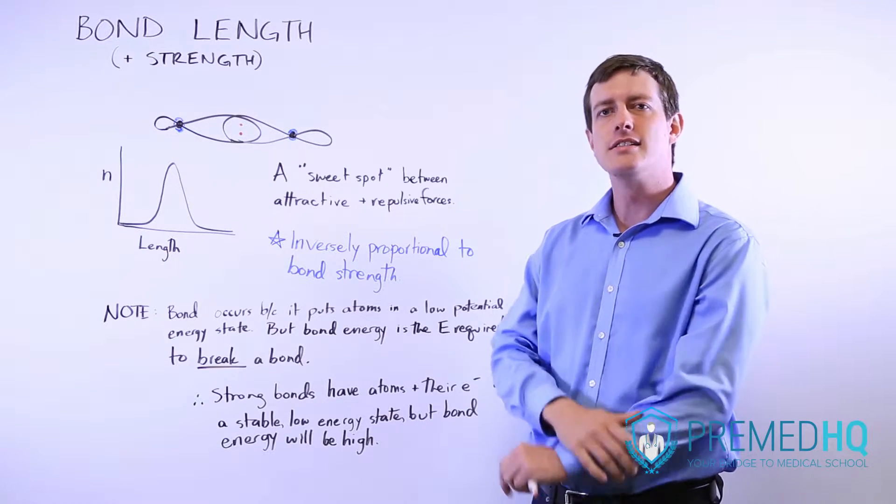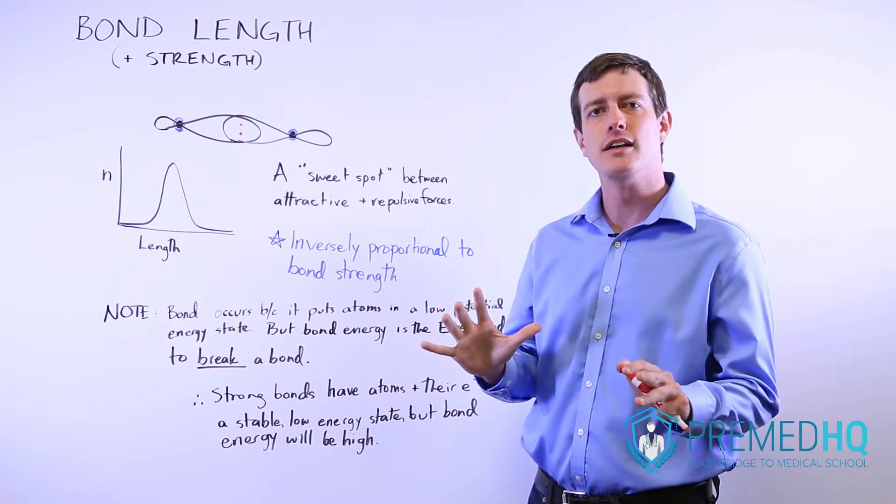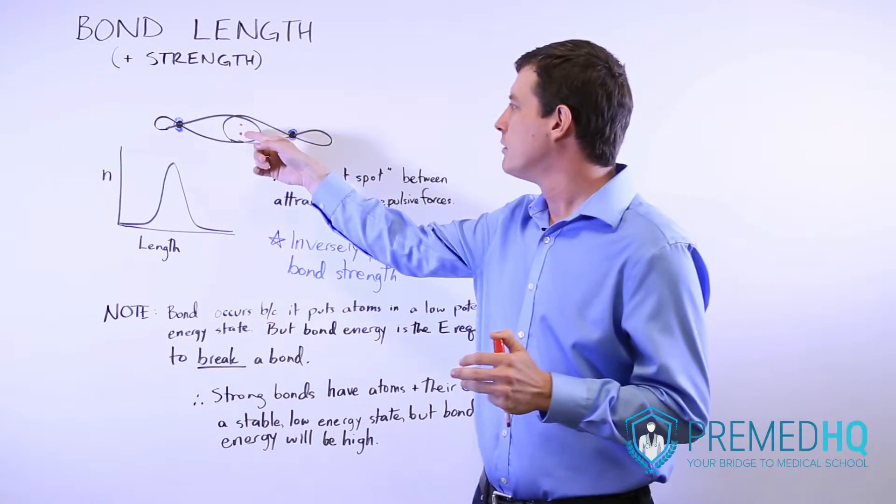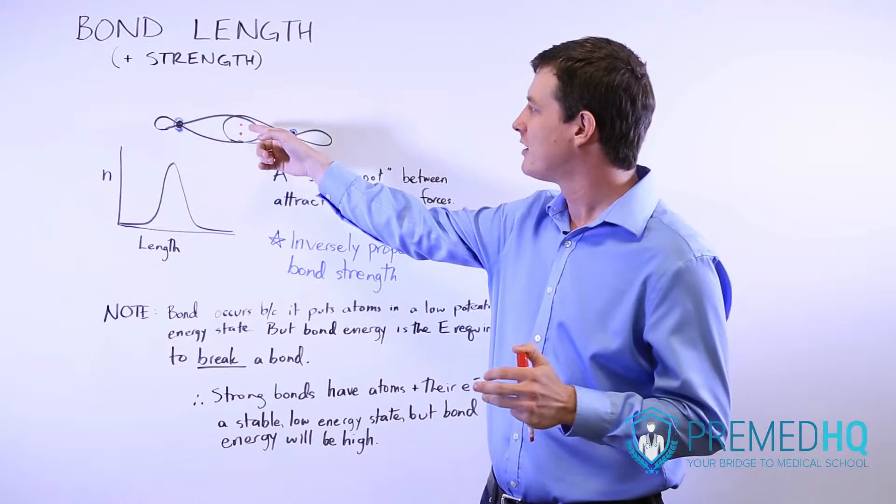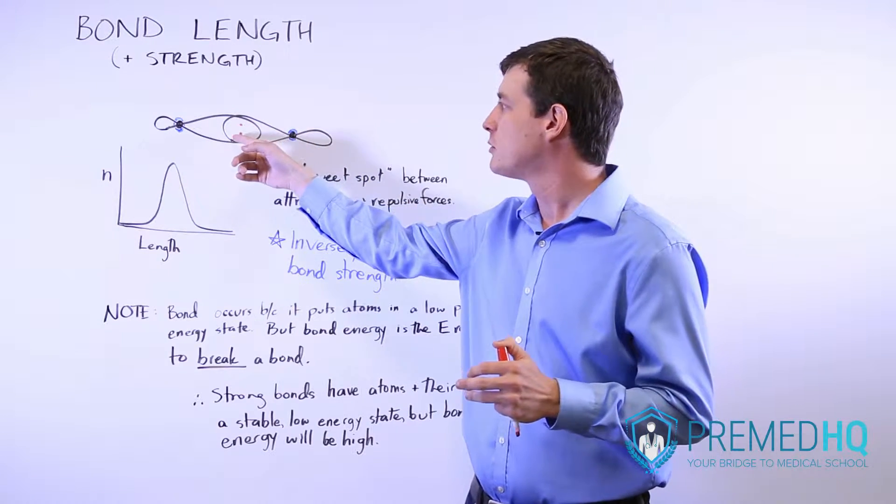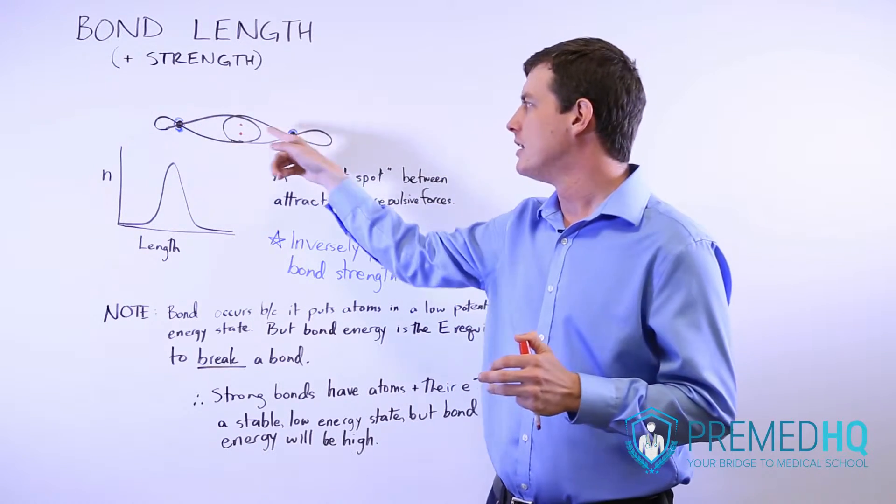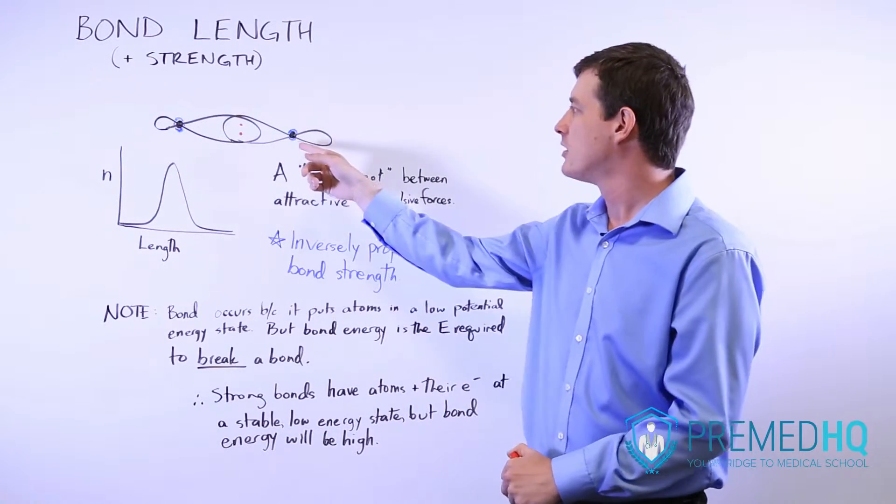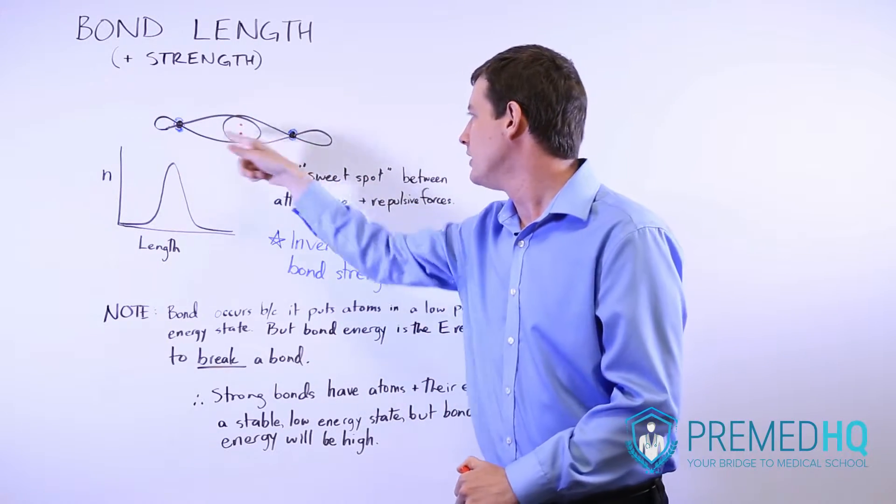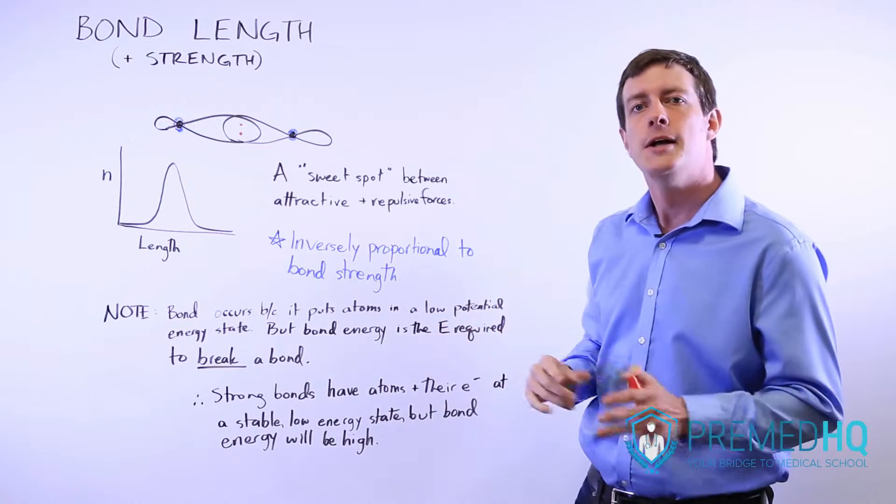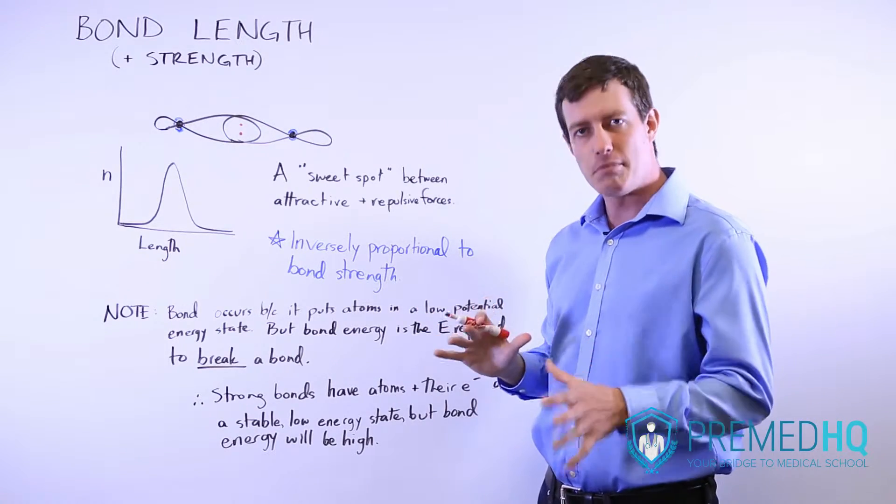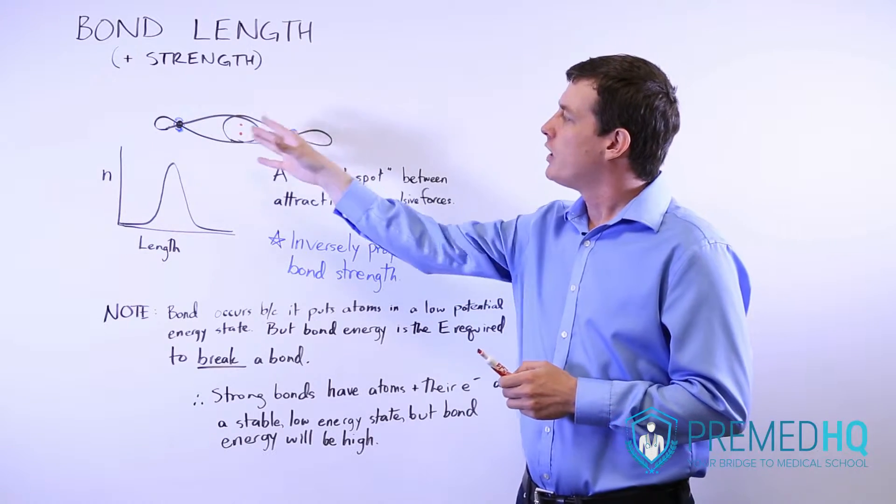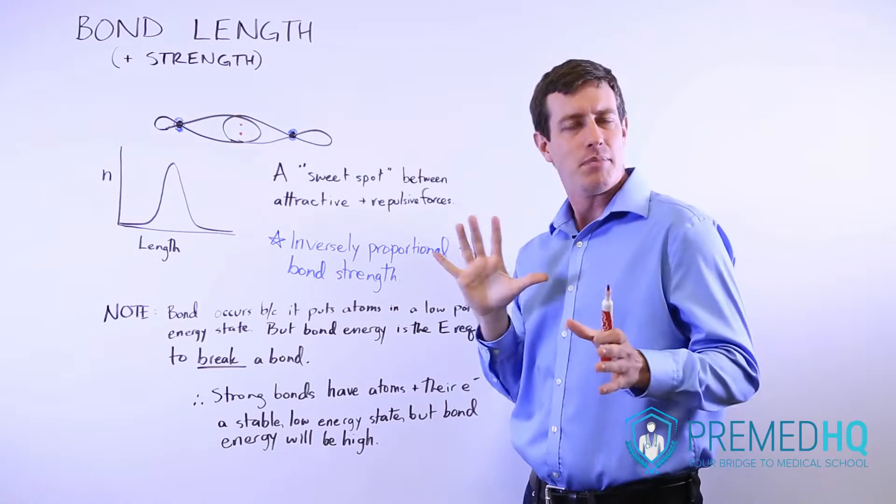Bond length is never a static thing, but instead something produced by the repulsive forces between electrons, the attractive forces between the electrons and the positively charged nuclei on either side, and perhaps repulsion between the two nuclei themselves. There are a lot of forces at play, but what that means is that you have bonds that often oscillate a bit in length.